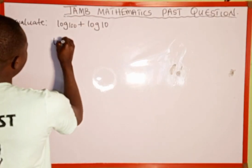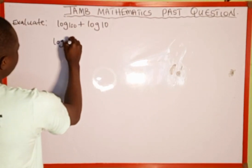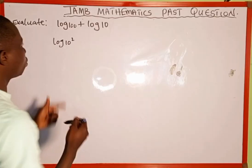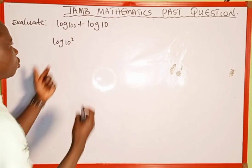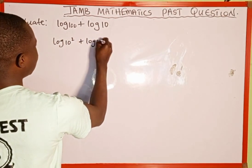What we are going to do is log 100 can also be written as 10 to the power of 2, because 10 multiplied by 10 is going to give us 100, then plus log of 10.